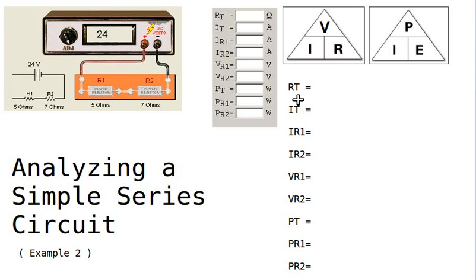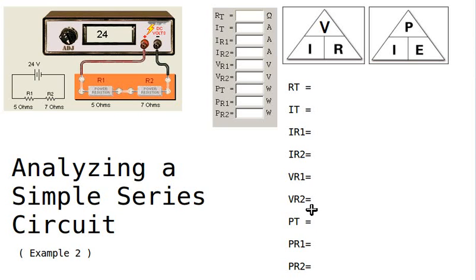We'd like to find the total resistance, the total current — or the current through the power supply — the current through each of the resistors R1 and R2, as well as the voltage across resistor 1, the voltage across resistor 2, the total power of the entire circuit, as well as the power through resistor 1 and the power through resistor 2.